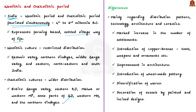When the Neolithic period was succeeded by the Chalcolithic, the general pattern of life did not change, but there were important differences in technology, architecture, and ceramics. Significant differences include a marked increase in the number of settlements, introduction of copper-bronze for manufacturing tools, ornaments, and weapons, improvement in architecture, introduction of wheel-made pottery, diversification of wares, and profuse decoration of vessels by painted and incised designs.